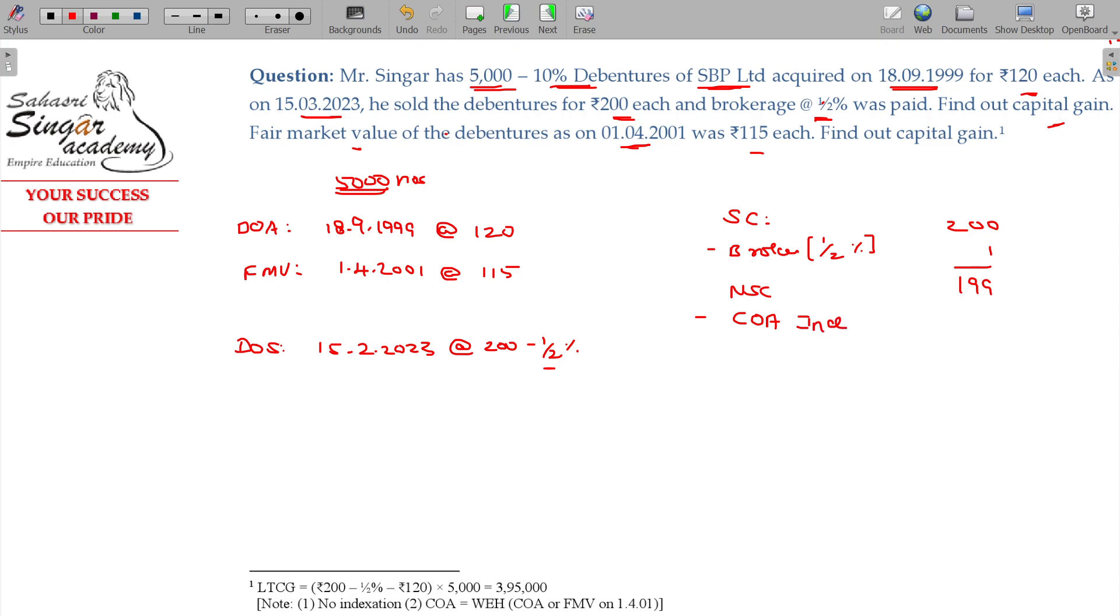Of course, indexation is not applicable due to Proviso 4 of Section 48. If the acquisition is before 01-04-2001, take fair market value or cost, whichever is higher. So Rs. 120 will be taken.